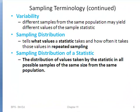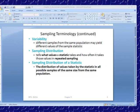Let's look at a couple more terms. Variability: different samples from the same population may yield different values of the sample statistic — in other words, you have variability. The sampling distribution tells what value a statistic takes and how often it takes those values in repeated sampling. Specifically, the sampling distribution of a statistic is the distribution of values taken by the statistic in all possible samples of the same size from the same population. Remember, with sampling distributions, we talk about a specific sample size.